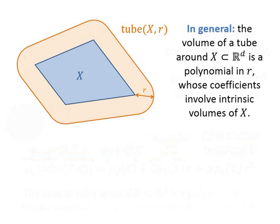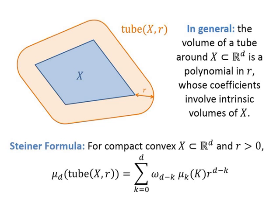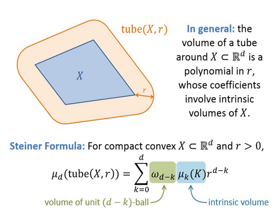This is an important principle. In general, if I have a d-dimensional compact convex set X, the d-dimensional volume of the tube around X is a polynomial in r whose coefficients involve the intrinsic volumes of X. This is called the Steiner formula, related to the Weyl tube formula. The volume of the tube is given by a sum involving omega_{d-k} — the volume of the unit (d-k)-ball — times the intrinsic volume. This formula is often used as the definition of intrinsic volumes for compact convex sets.